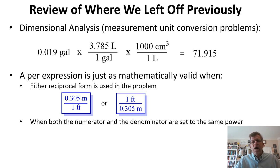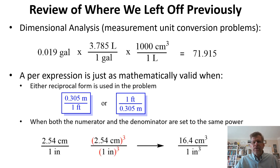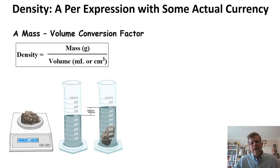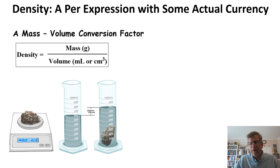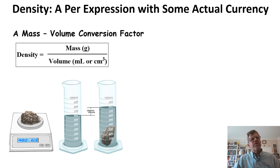For these dimensional analysis problems, we use per expressions, and we found that they are very sturdy — mathematically valid when either reciprocal form is used. We ended with an example showing that we can raise both the numerator and the denominator of a per expression to the same power and it will be just as mathematically valid. Many of the dimensional analyses we used before had virtually nothing to do with chemistry.